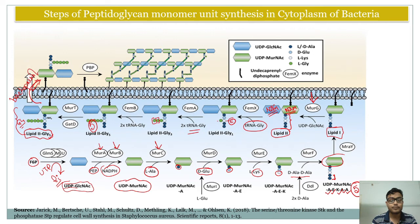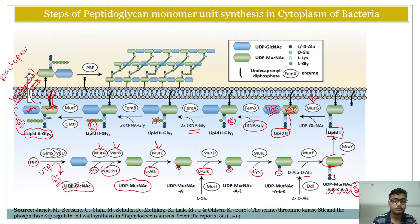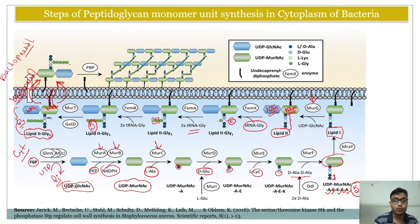Bactoprenol now comes into play. Bactoprenol, specifically undecaprenyl diphosphate, attaches to these NAG-NAM subunits and helps transport them from the cytosol to the outside of the bacteria. Once outside the bacteria, these individual subunits are joined with each other to form the bacterial peptidoglycan layer.